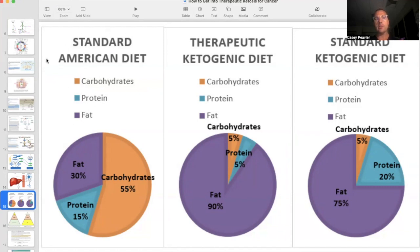And this is looking at a percent based off of the standard American diet. So generally, standard American diet is about 55% carbohydrates, 15% protein, and 30% fat.